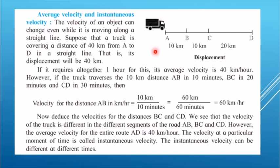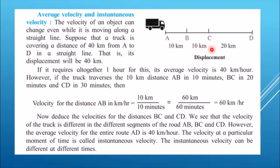Suppose there is a truck moving from point A to D along a straight line: A to B is 10 kilometers, B to C is 10 kilometers, and C to D is 20 kilometers. So the total displacement is 40 kilometers. It requires 1 hour altogether, so the average velocity is 40 kilometers per hour. But the truck covers A to B in 10 minutes, B to C in 20 minutes, and C to D in 30 minutes. If we calculate only for A to B: distance of A to B is 10 kilometers in 10 minutes, which is 1 kilometer per minute.